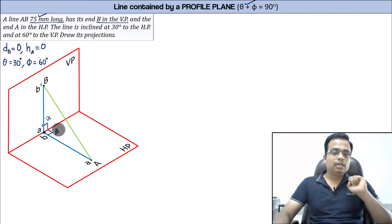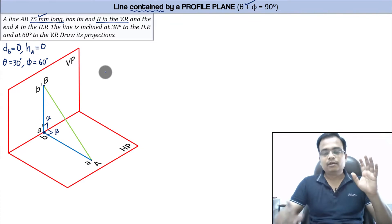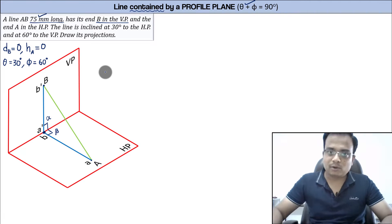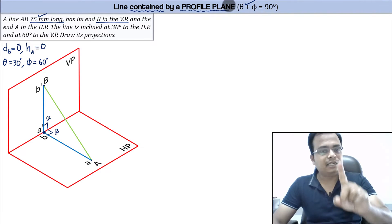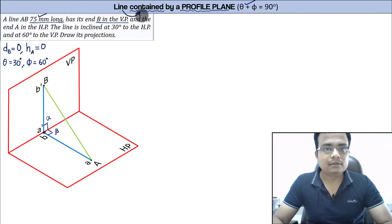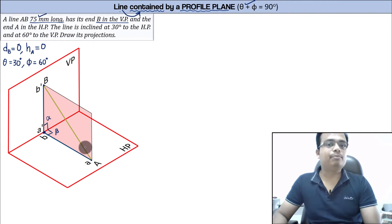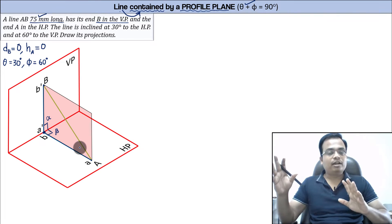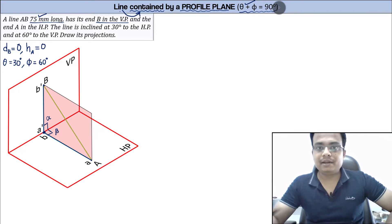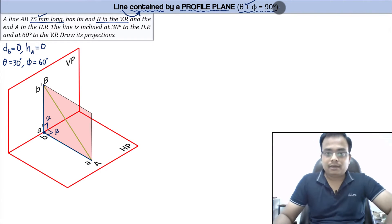Apart from this mathematical expression, there is the concept of a line contained by a profile plane. A profile plane is perpendicular to both HP and VP, and the line — like this ladder — is also contained by that plane. So remember two things: whenever a line is contained in a profile plane, theta plus phi equals 90 degrees. This is a very important objective-type problem, something that can be asked in engineering services examinations.